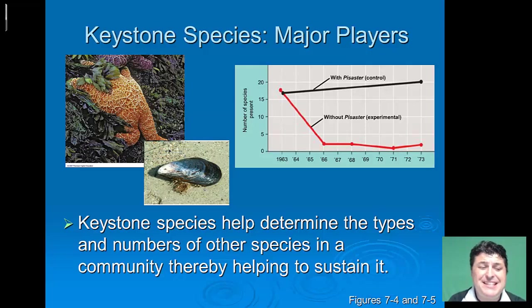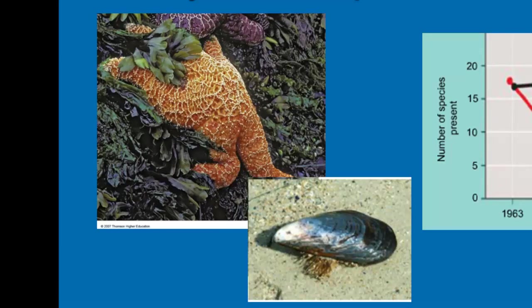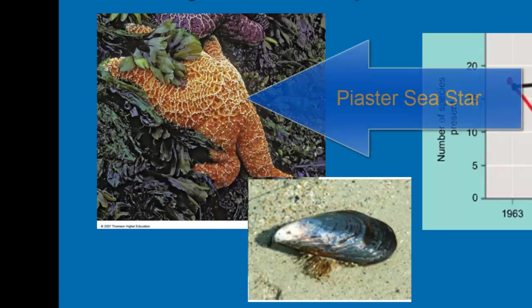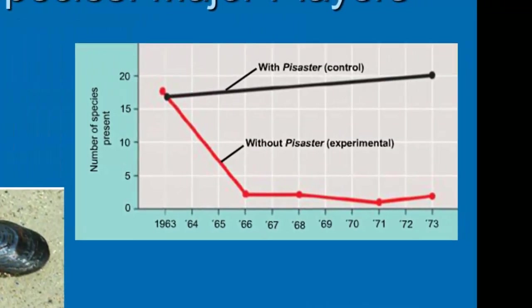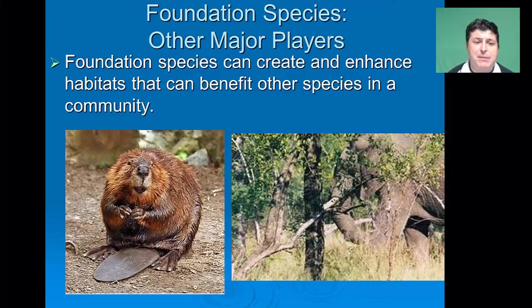Keystone species determine the types and numbers of other species in a community, thereby helping to sustain it. Top predator keystone species feed on and help regulate the populations of other species. Ecologist Robert Payne conducted a controlled experiment along the rocky Pacific coast of Washington demonstrating the keystone role of the top predator sea star, Pisaster ochraceus, in an intertidal zone community. Payne removed the mussel-eating Pisaster sea stars from one rocky shoreline community but not from an adjacent control community. Without the sea stars, mussels took over and crowded out most other species. The loss of a keystone species can lead to population crashes and extinctions of other species that depend on it.